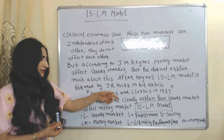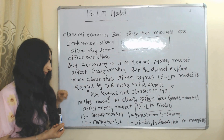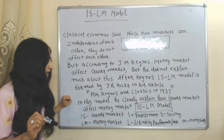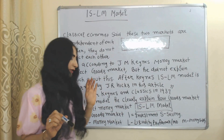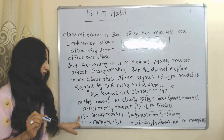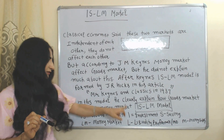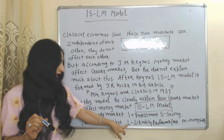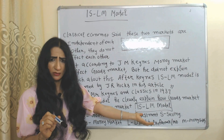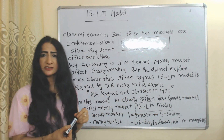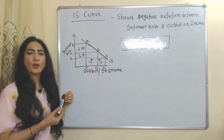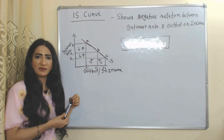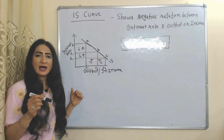Hicks introduced the IS-LM model in his article 'Mr. Keynes and the Classics' in 1937. In this article he clearly explained how the goods market affects the money market. IS represents equilibrium in the goods market — I represents investment and S represents saving. LM represents equilibrium in the money market — L means liquidity preference or money demand, and M represents money supply.